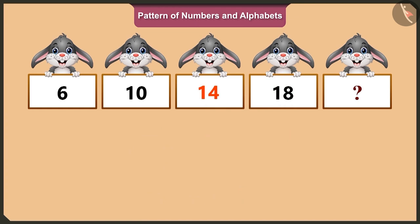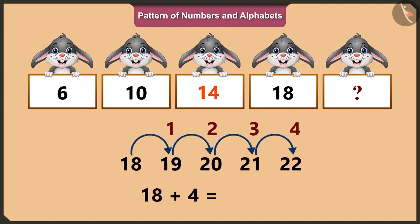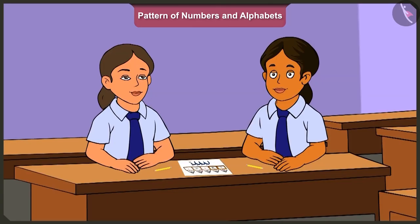Hmm. After eighteen, nineteen, twenty, twenty-one, twenty-two. That means we get twenty-two on adding four to eighteen. Very good, Vinny.